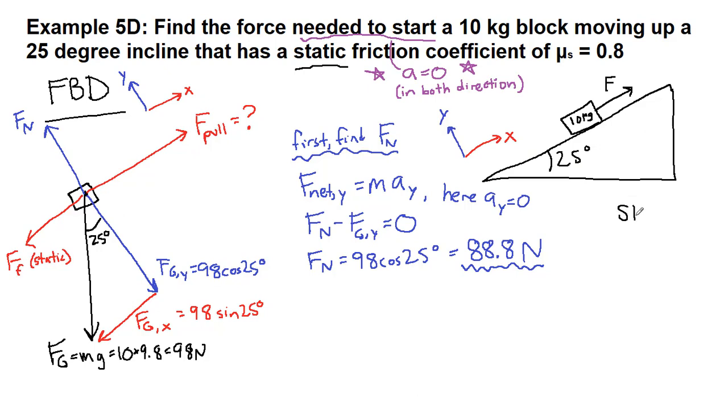A separate thing to note: for static friction, the definition is less than or equal to mu s times Fn, which means that the static friction force is less than or equal to 0.8 times the normal force, which is 88.8 here, lots of 8s.